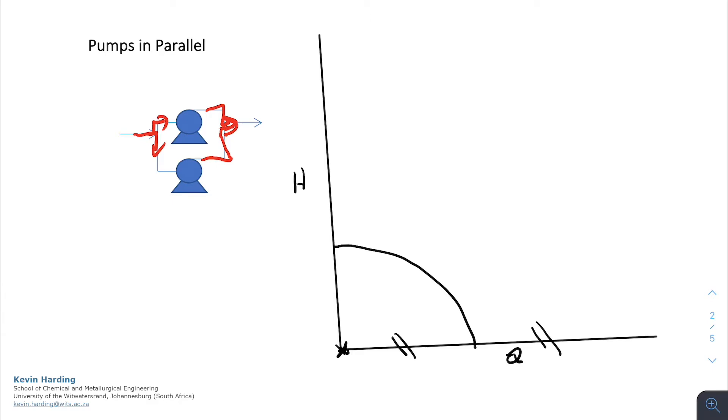At any point along H, we have a constant H, but we're going to have a doubling of the Q. So a doubling of the Q is going to take these points up to that point, and this time we're going to have a new pump curve looking something like that. So for our pumps in parallel, a neater version of this diagram, we are now going to add the flow rate.